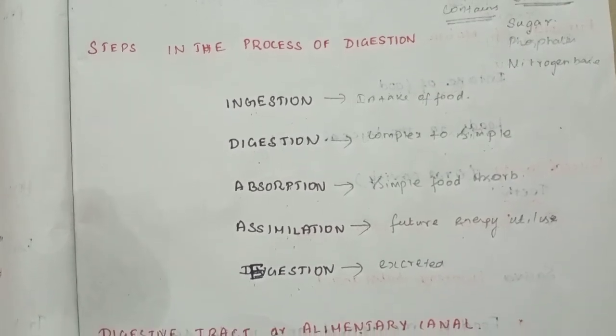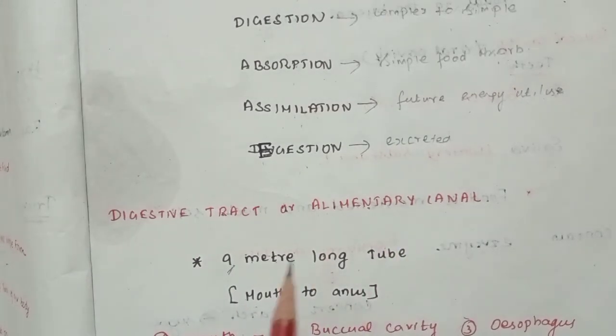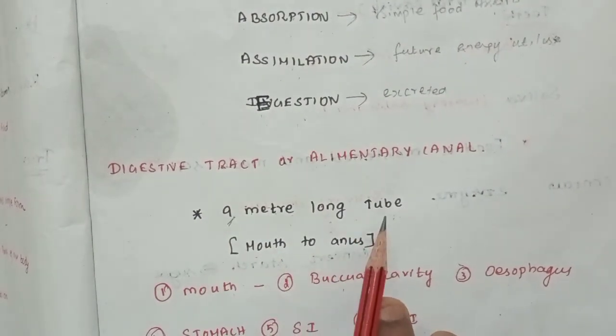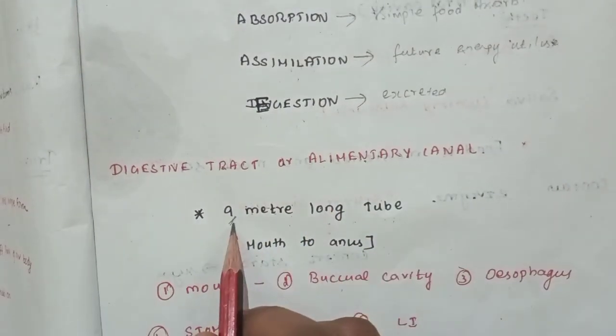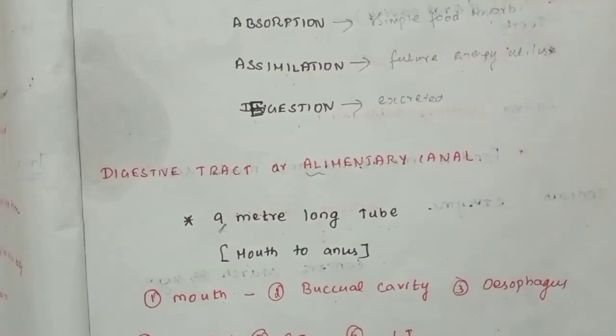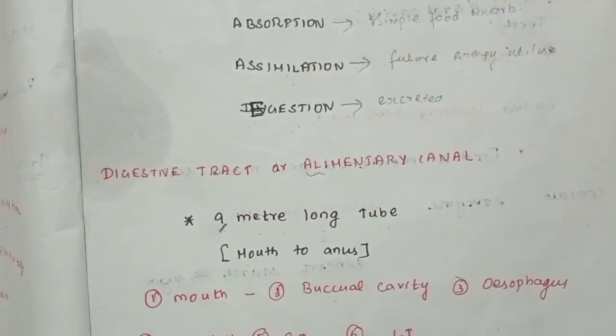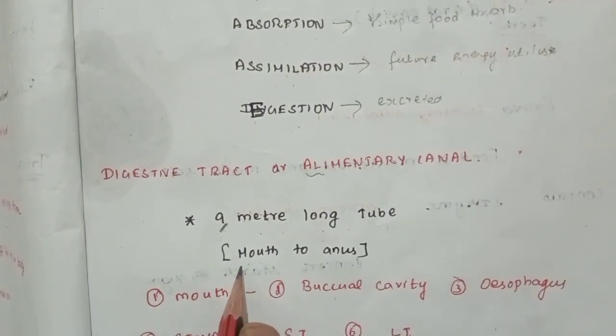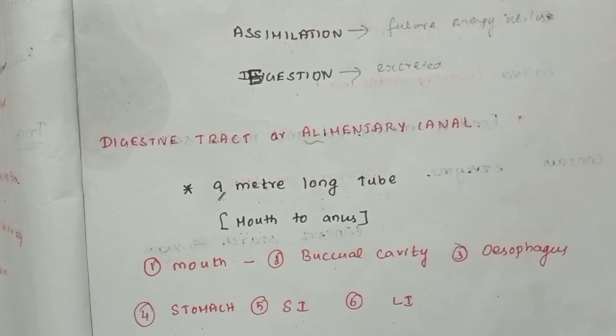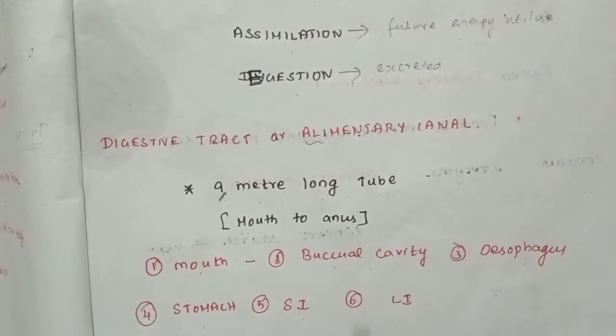In our digestive system, there is the digestive tract or alimentary canal. It's a 9 meter long tube, from mouth to anus. The parts are: mouth, buccal cavity, esophagus, stomach, small intestine, large intestine.